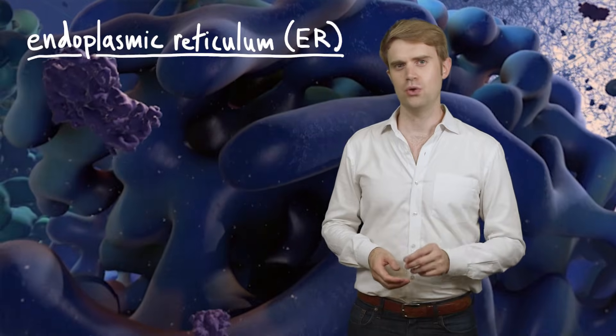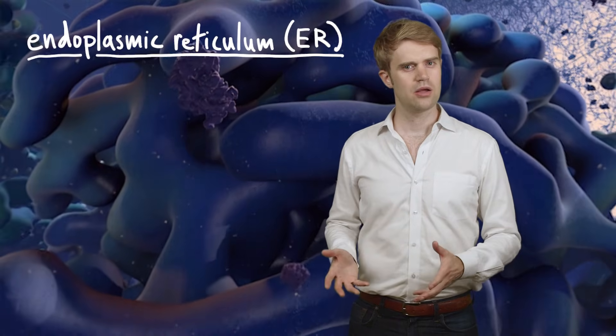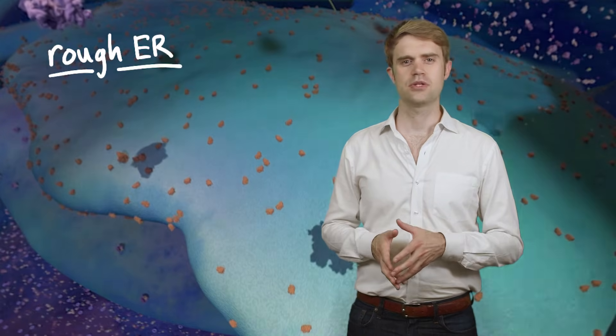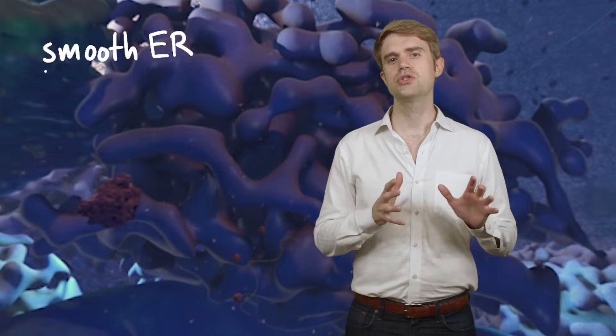Here's a better view of the endoplasmic reticulum. When you explore the cell, you'll see that there are actually two types. One type has little orange dots. This is known as rough ER, and another type doesn't. It's called smooth ER.